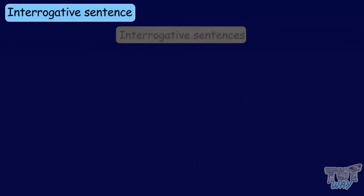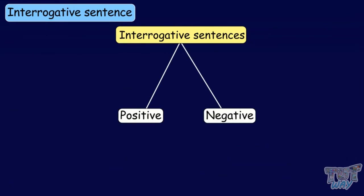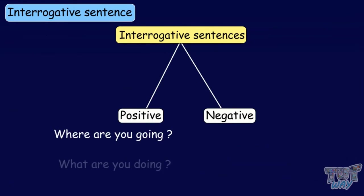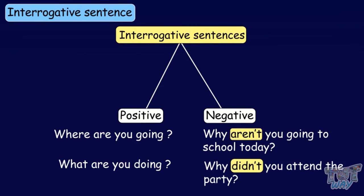Every type of sentence can further be divided into two types — they can either be positive or negative. "Where are you going?" and "What are you doing?" are positive sentences. "Why aren't you going to school today?" and "Why didn't you attend the party?" are examples of negative interrogative sentences.